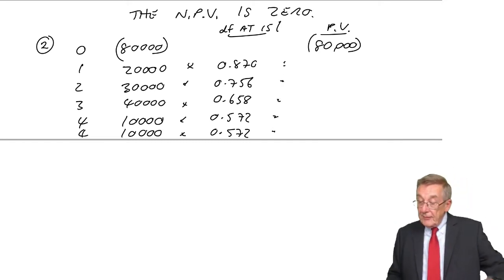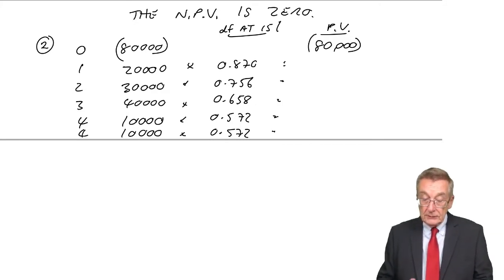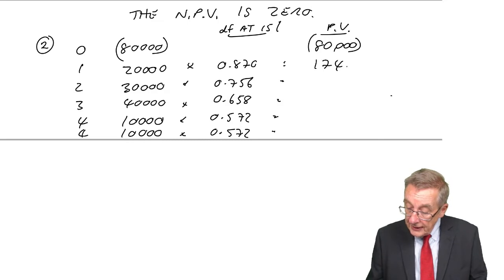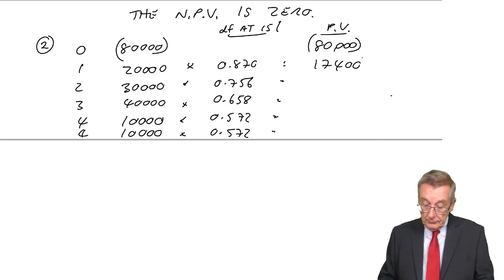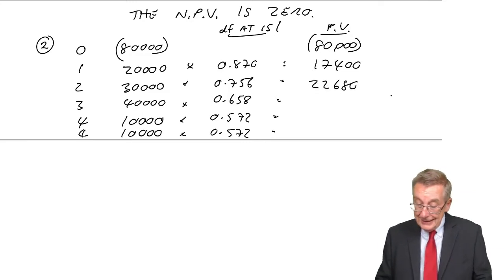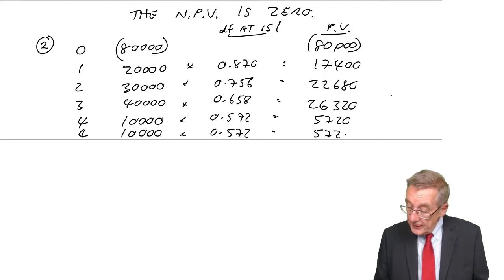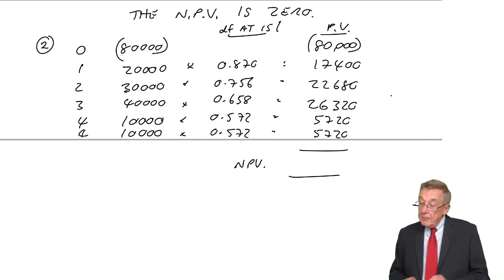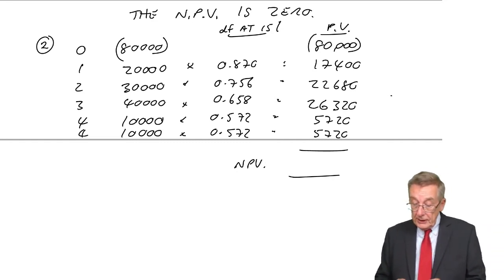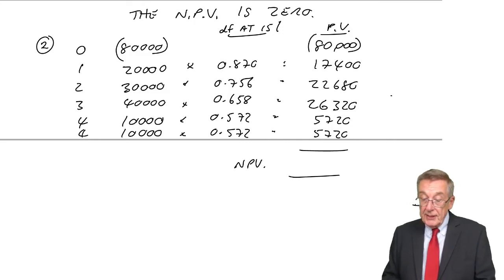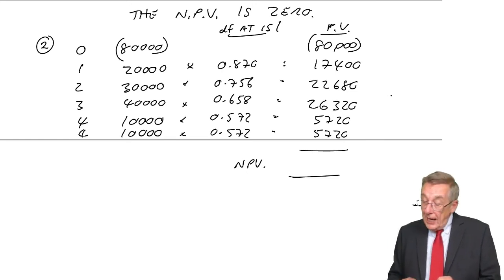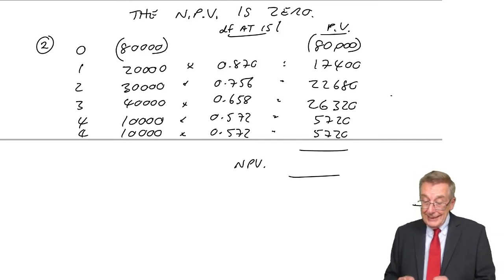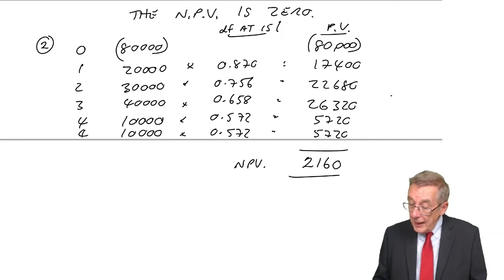Giving present values of 17,400, 22,680, 26,320, 5,720, 5,720. So what's the NPV? The inflow is 17,400 plus 22,680, 26,320, 5,720, 5,720 less the 80,000. I get 2,160 negative.